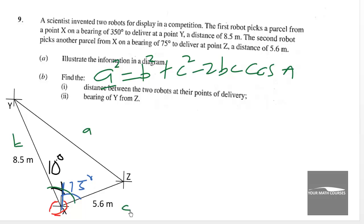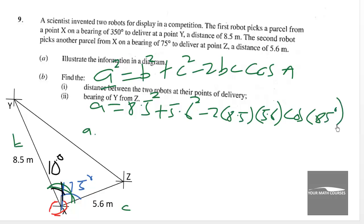Then we are going to get A which is Y, Z to be equal to B squared which is 8.5 squared and then plus 5.6 squared minus 2 times 8.5 times 5.6 cos of the angle opposite the side A which is the angle here 85 degrees. So A squared will be equal to 72.25 plus 31.36 minus now all of this will give us 95.2 times 0.0872 to 4 decimal places.